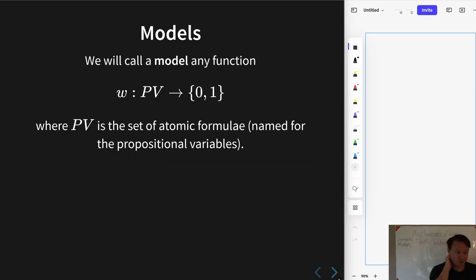Okay, so the first object to introduce is what we will call a model, and this is an assignment of propositional variables to 0, 1. Effectively what we're doing is we're taking those atomic formulae, the P0, P1, and so on, and we are assigning each one some truth values, 0 or 1. And so we call this a model.